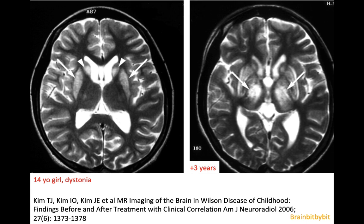This 14-year-old girl with dystonia shows on T2-weighted images high signal in the putamen and caudate. Despite adequate therapy, her MRI deteriorated after three years.